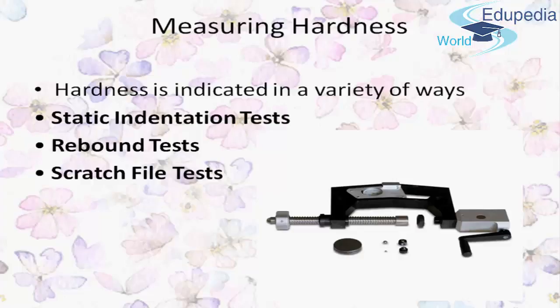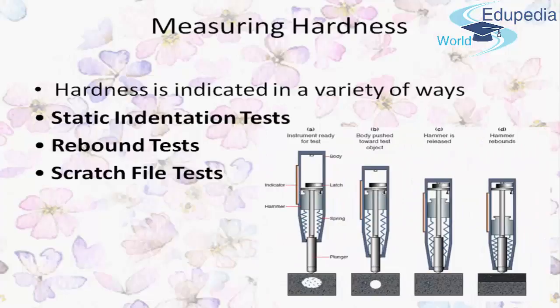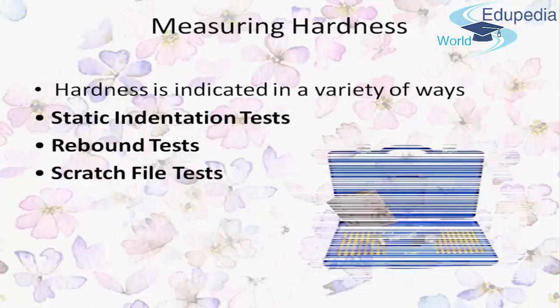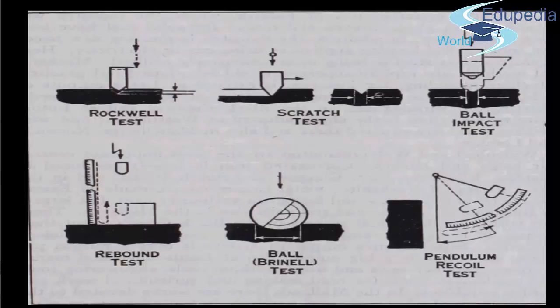The second is the Rebound Test, where an object of standard mass and dimension is bounced from the surface of the workpiece being tested, and the height of the rebound is the measure of hardness. The Scleroscope and Leeb tests are examples of this. Third is the scratch or file test, which is very common — the idea is that one material is capable of scratching another.